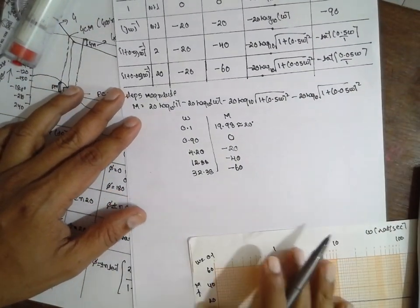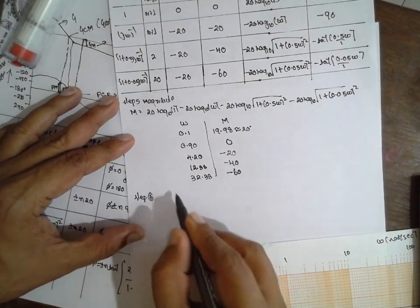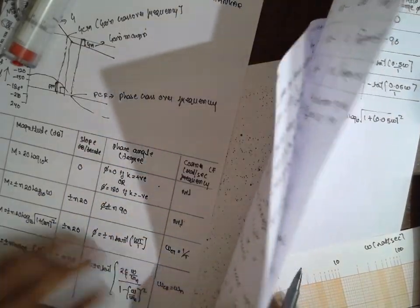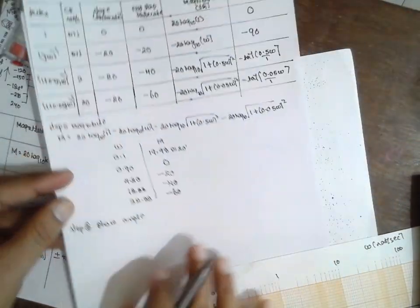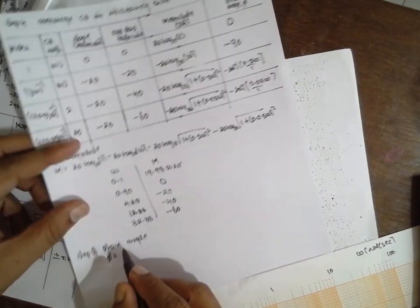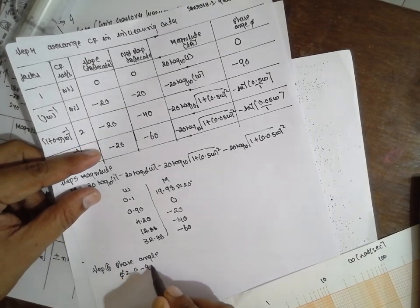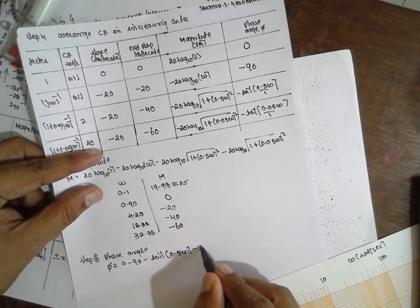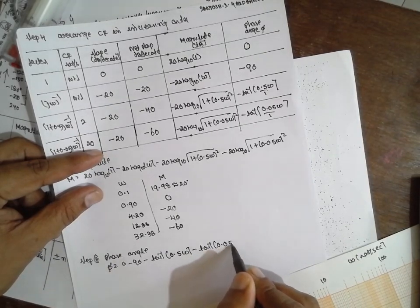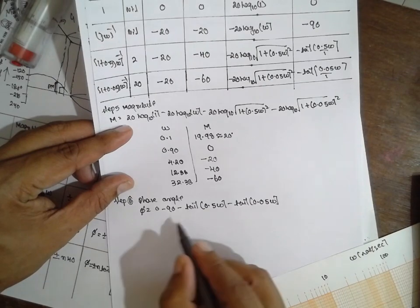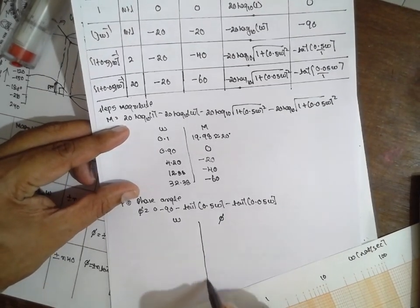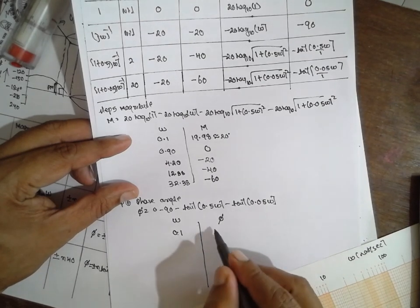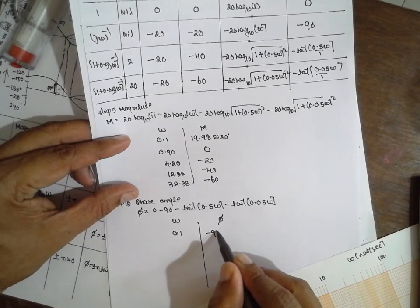Step 6: Phase angle. Phi = 0 minus 90 minus tan inverse(0.5 omega) minus tan inverse(0.05 omega). For omega = 0.5, substituting gives the phase angle as approximately minus 93.14 degrees. The phase axis considers minus 90, minus 120, minus 150, minus 180, minus 210, minus 240.